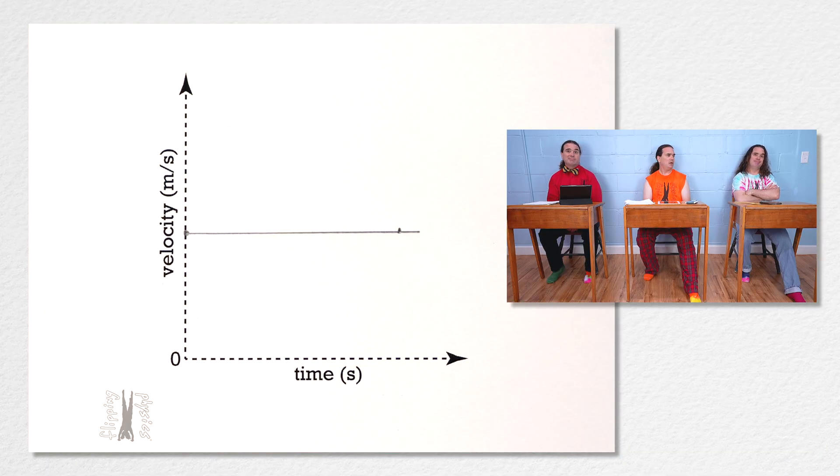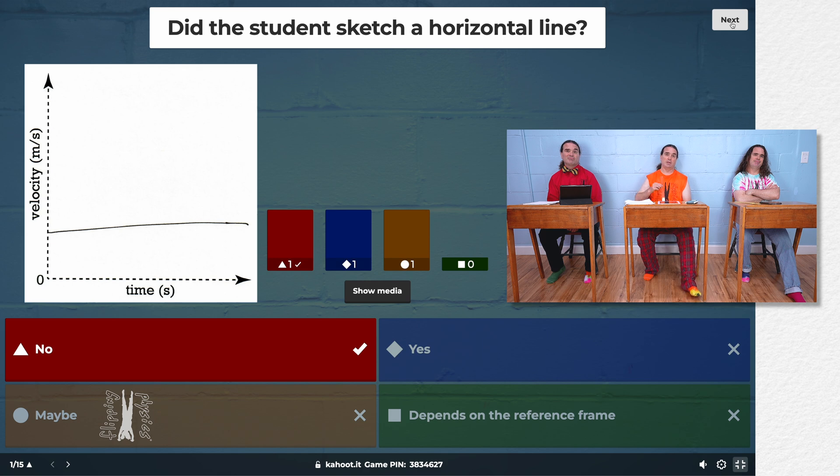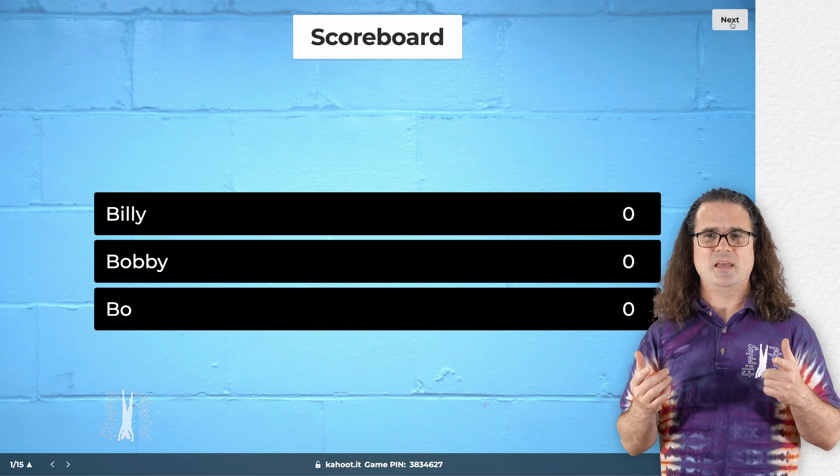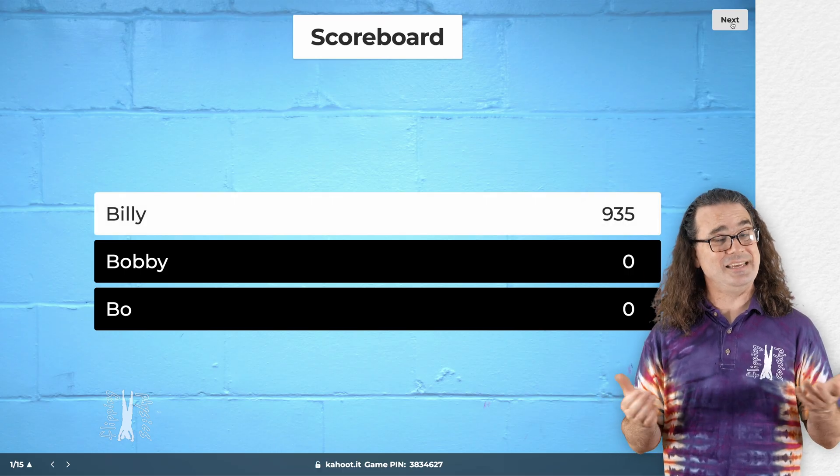With a straight edge? Actually, I use a transparent ruler. Why? It makes it easier to see all the data points when I'm drawing my best fit line. Oh. That makes sense. Yeah. Wow. That is a good idea, Bobby. Thanks. And looks like Billy is in the lead.